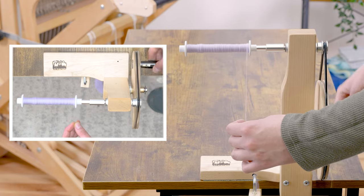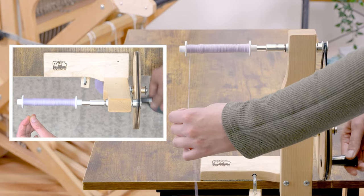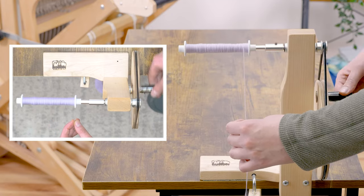Going slowly ensures that you'll get a clean bobbin that winds off nicely. Good tension and less peaks and valleys will help your yarn wind off the bobbin much easier.